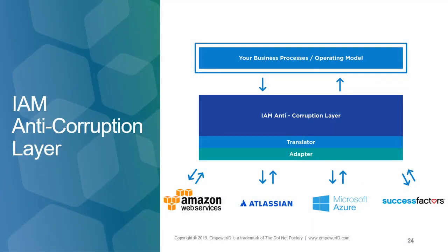Identity management sits in the middle between the business and the technology. In EmpowerID, its job is to create what's called an anti-corruption layer — a microservices term for something in the middle that allows you to not modify your business logic to mold it to the constraints or terminology of the technical. So you cannot corrupt how you want to do business by the systems you employ. Your business can follow the most optimal model and use any systems you want because there's something in the middle translating and adapting, not requiring you to change how you do things.